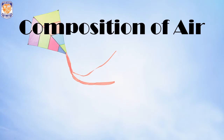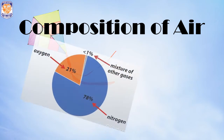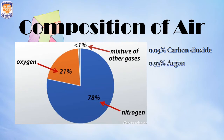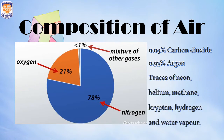Starting with the composition of air — air is not just made up of any one kind of gas, but it is a mixture of various gases. It consists of 78% nitrogen, 21% oxygen, and around 1% of other gases. Those other gases include 0.03% carbon dioxide, 0.93% argon, and traces of neon, helium, methane, krypton, hydrogen, and water vapour.